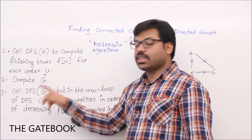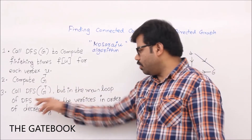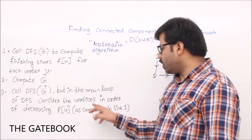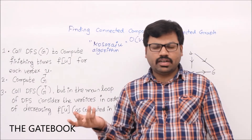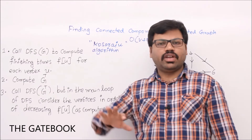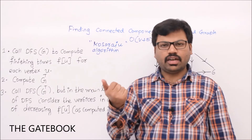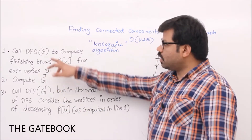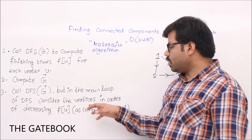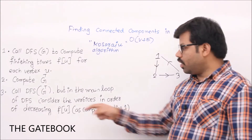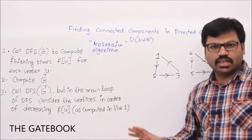In the main loop of the second DFS, consider the vertices in order of decreasing f[u]. Normally in DFS we pick vertices in a random order, but here the second time on G transpose the vertex selection will be based on decreasing finishing time. Let's blindly run this algorithm and see what happens.